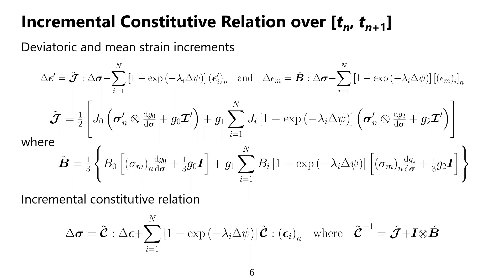Next, consider the incremental constitutive relation over small time interval T_n and T_{n+1}. We can relate the deviatoric and the mean strain increments to the stress increments and the deviatoric and mean strains, respectively, as shown at the top, where tilde J and tilde B are related to the instantaneous and transient shear and bulk compliances, respectively. We can then obtain the incremental constitutive relation by reorganizing the top equations, as shown at the bottom. The bottom equation relates the stress increments to the strain increments and the strain, where tilde C is the tangent stiffness and depends on tilde J and tilde B.